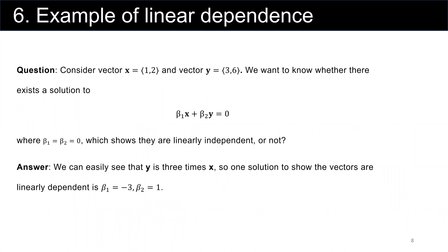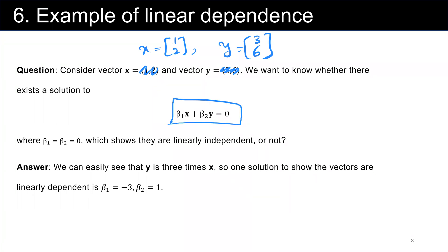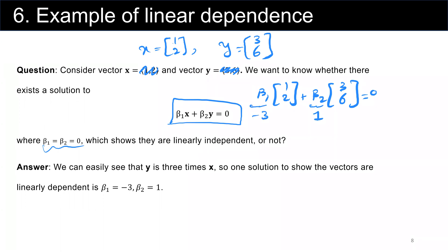Here are some examples of linear dependence. Consider vector x = (1, 2) and vector y = (3, 6). We want to know whether there exists a solution where beta_1 * x + beta_2 * y = 0 with beta_1 and beta_2 not both equal to zero. Indeed such a solution exists, which means these vectors are linearly dependent.